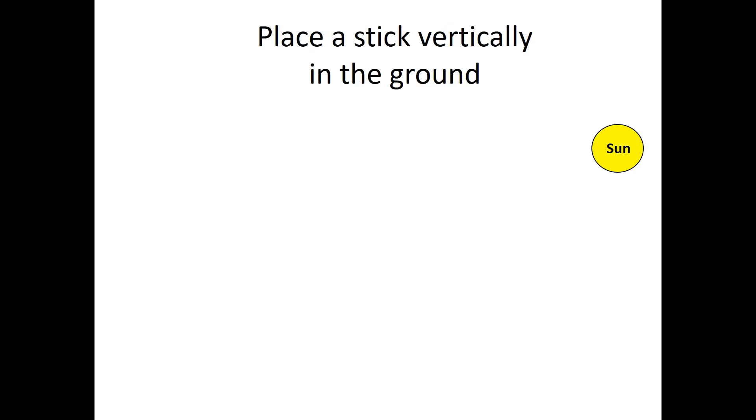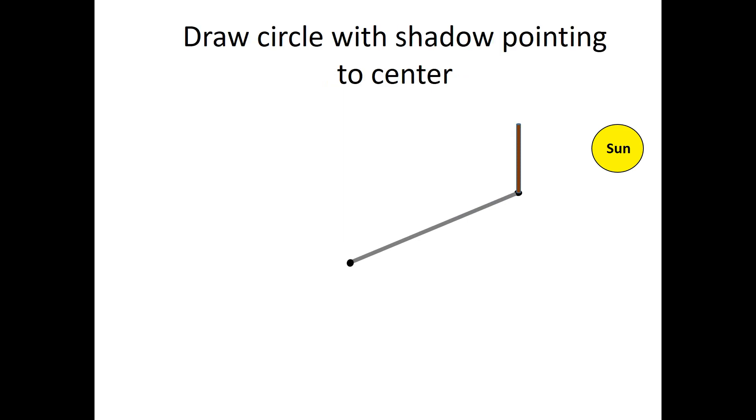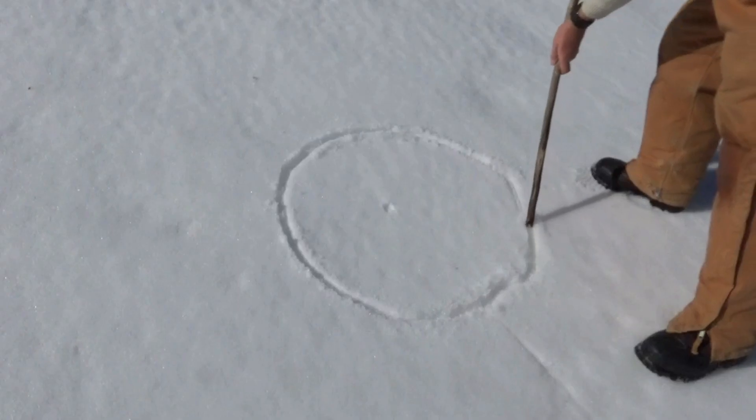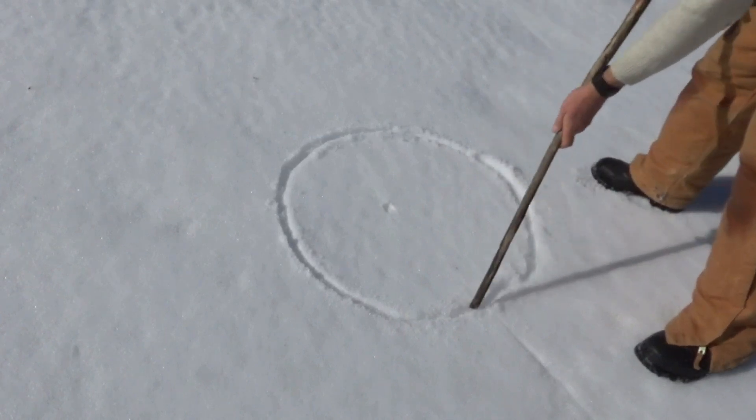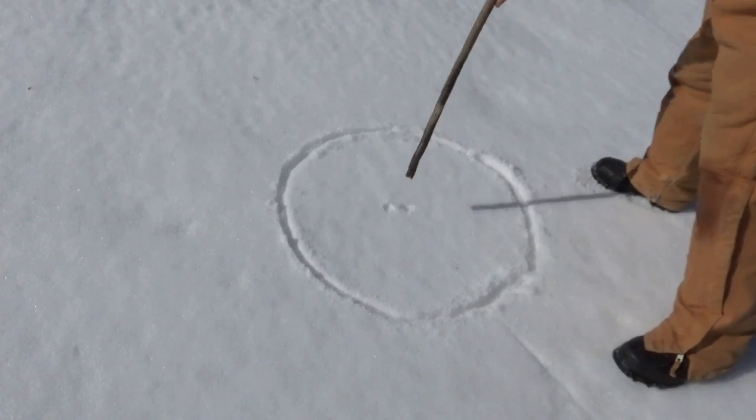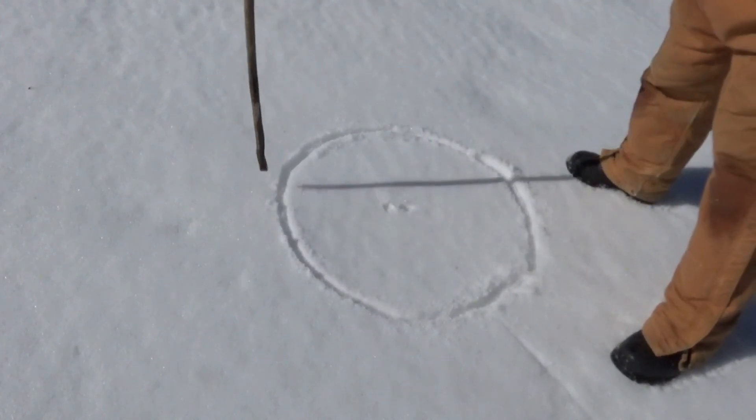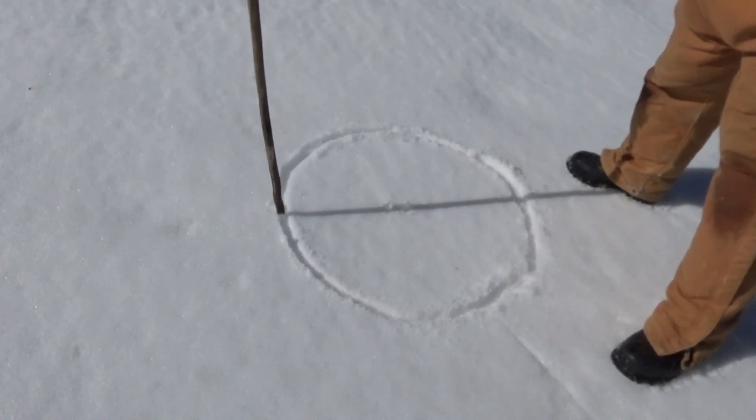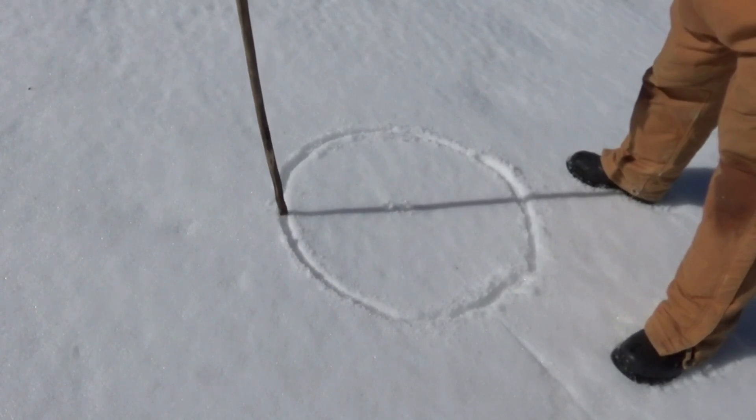I start by placing a stick vertically in the ground and marking the end of its shadow. Then, I draw a circle around that end point to represent the face of a large watch. Sometimes, I start by drawing the circle first and then adding the center point. Then, I place the vertical stick on the edge of the circle so that its shadow points to or passes through the center point. Either way works fine.